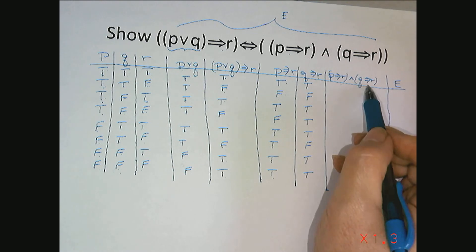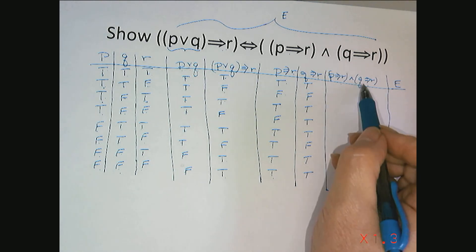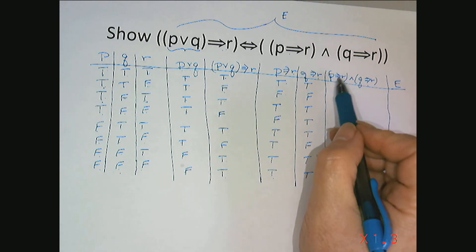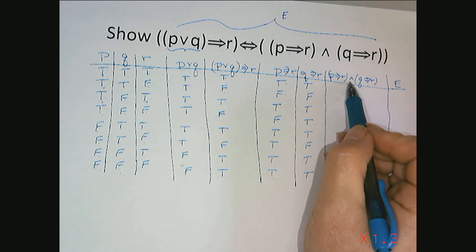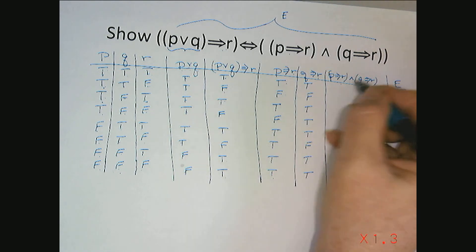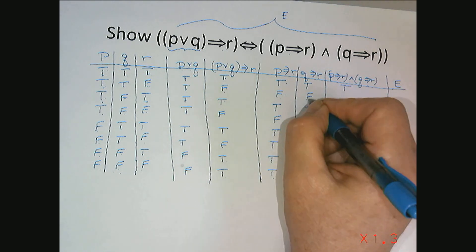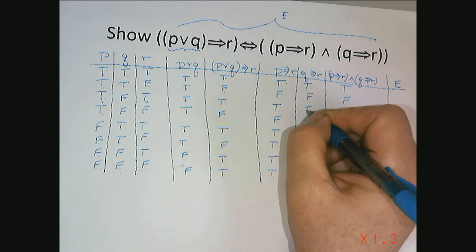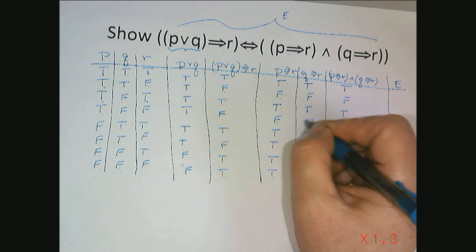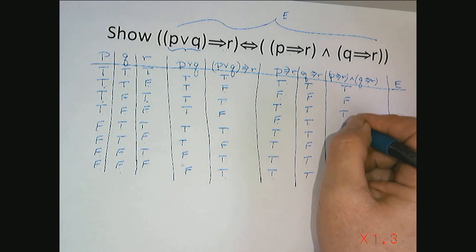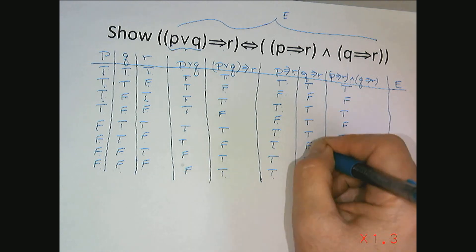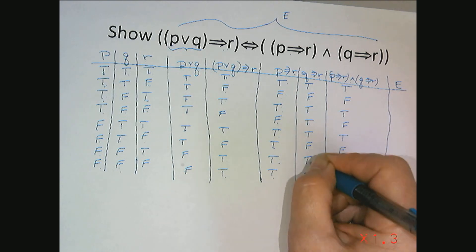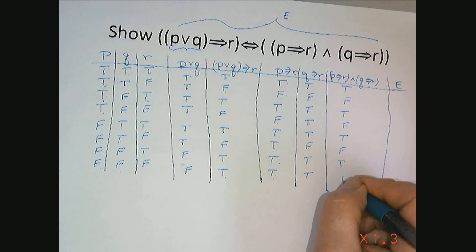Now I need to look at the AND of p implies r and q implies r. In order for these two sub-components joined by an AND to be true, they both have to be true. True and true is true; false and false is false; true and true is true; false and true is false; true and true is true; true and false is false; true and true is true; true and true is true.